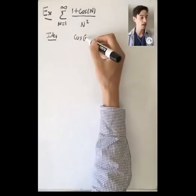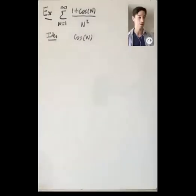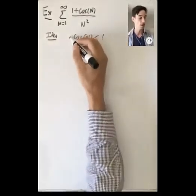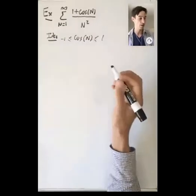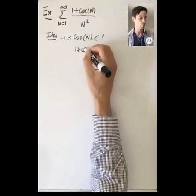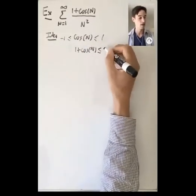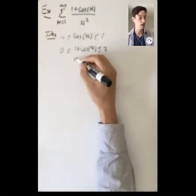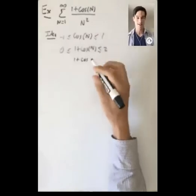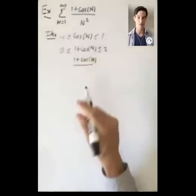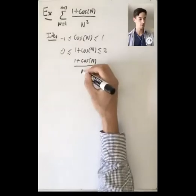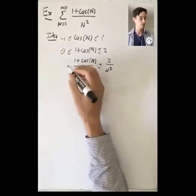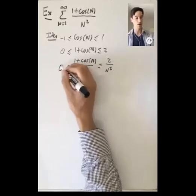The idea is that cos n flips back and forth in a crazy way, but we know it's always at most 1 and at least −1. So 1 + cos n is always at most 2 and at least 0. Therefore (1 + cos n) / n² is always at most 2/n² and at least 0/n², which is just 0.